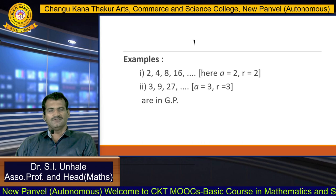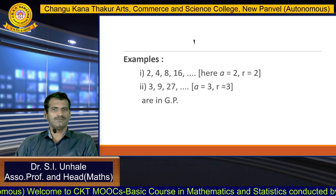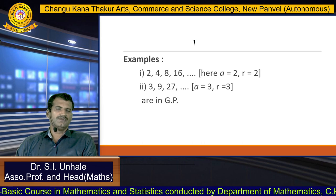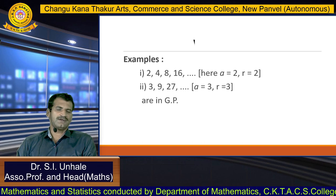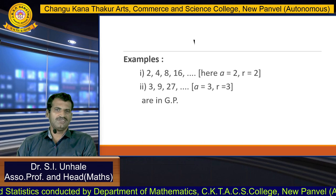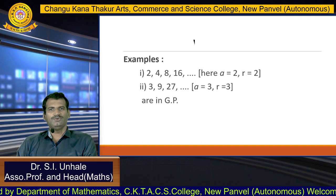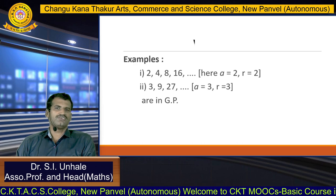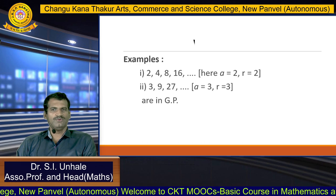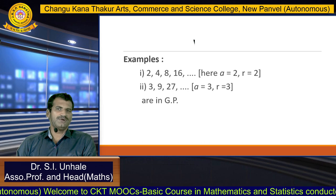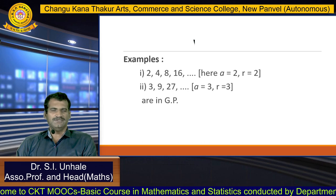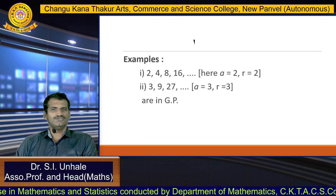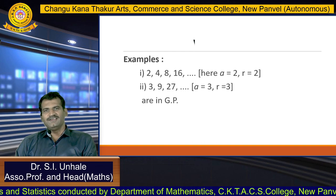In the second example: 3, 9, 27, and so on. The first term A is 3. The common ratio: 9 ÷ 3 = 3, and 27 ÷ 9 = 3 — so the ratio between consecutive terms is constant at 3. Therefore these progressions are called geometric progressions. These two are very important concepts in mathematics — AP and GP. In an arithmetic progression the difference between any term and its preceding term is constant, while in a geometric progression the ratio between any term and its preceding term is constant.